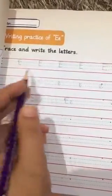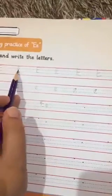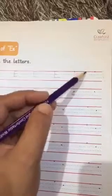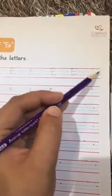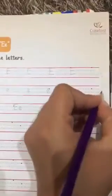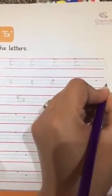Now we learn how to write letter E. First of all, you have to trace these letters. Then we count how many lines there are — one, two, three, four lines. So capital E has four lines.